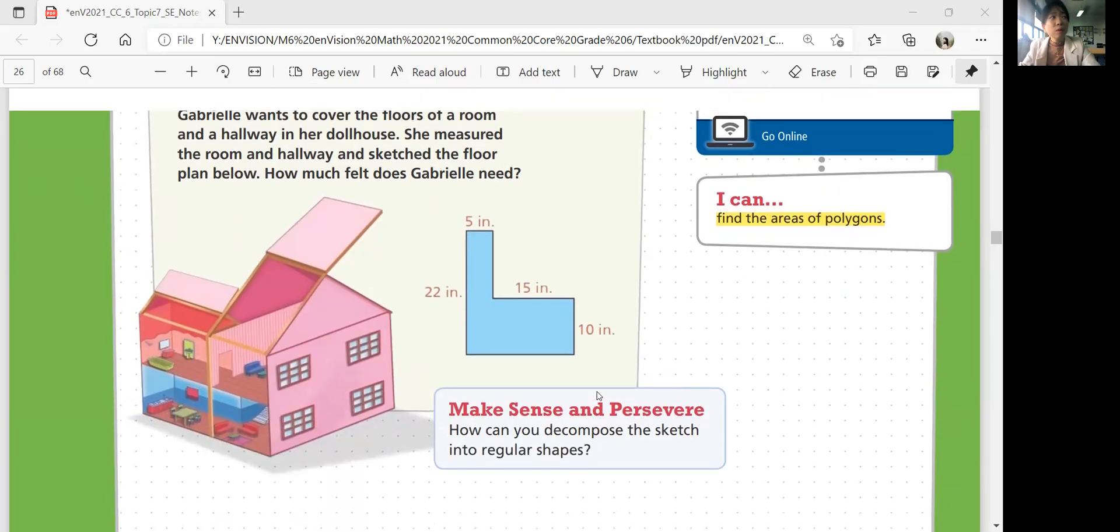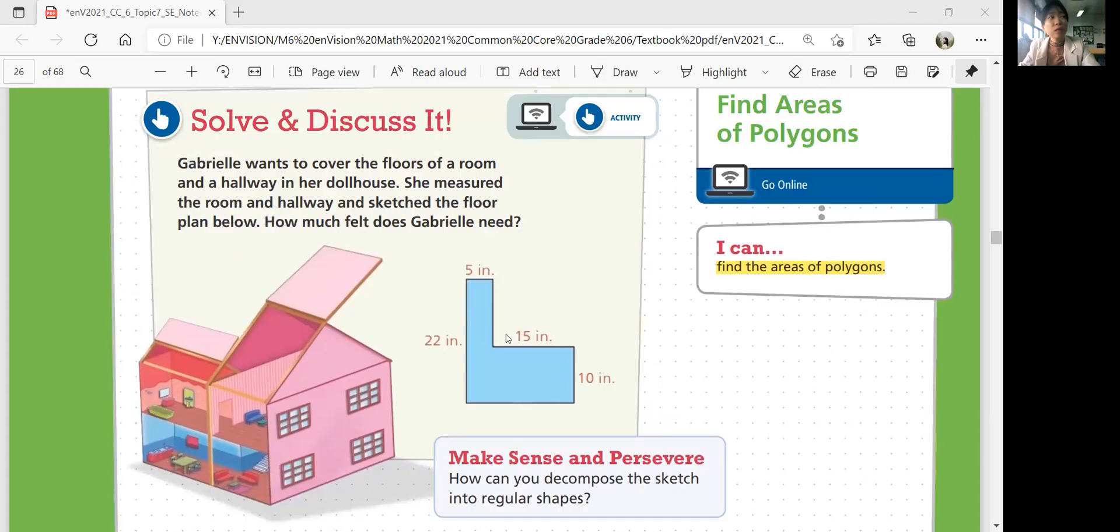Let's look at this model. We have this polygon with dimensions labeled here. We want to figure out the area of this. So if that side is 5 inches, that's 15, that's 10, that's 22. Can we figure out the area by decomposing the shape into familiar shapes that we know? Yes.